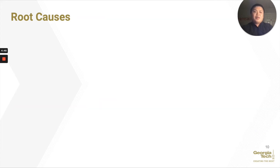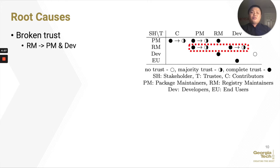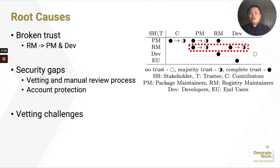The root cause of these supply chain attacks is actually a broken trust model. As the central authority in the ecosystem, registry maintainers have to be trusted. However, registry maintainers don't have to trust others, including package maintainers and developers. The security gap is that there is currently little to no vetting or manual review process, and account protection is not sufficient. While account protection can be enhanced by multi-factor or other mechanisms, the vetting process is not easily done, and we want to go further in this direction.